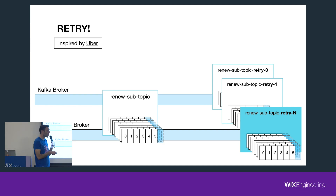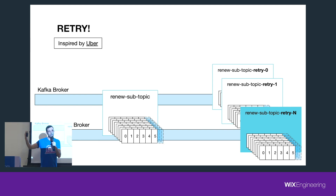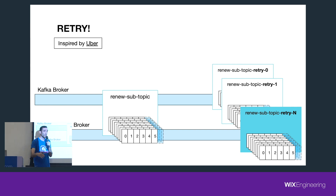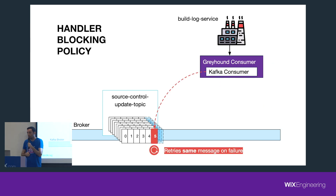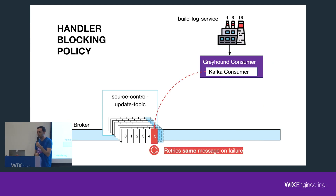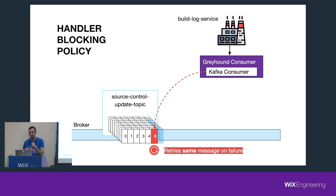One last point about retry topics: you'll get out-of-order processing. Once you put a message in a retry topic, the next message in the original topic may succeed, meaning messages are processed out of order. So what if your use case absolutely requires sequential processing and must never be out of order?